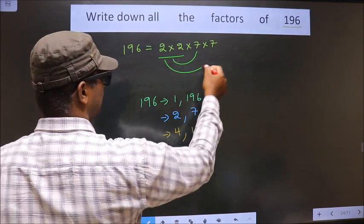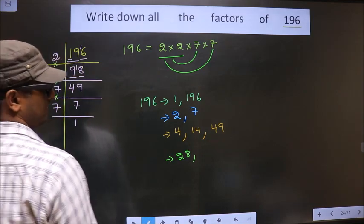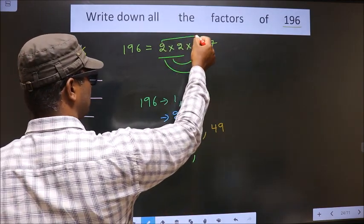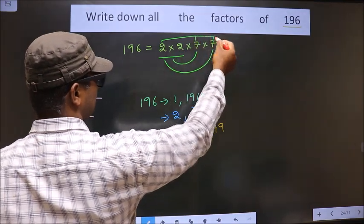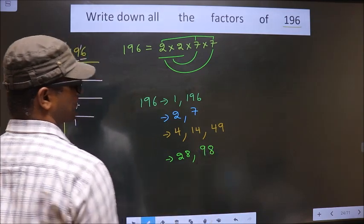Now I combine this with 7. Still we get 28 itself. Now even if I take these 2 numbers. Now 2 into 7 is 14. 14 into 7 is 98. Okay.